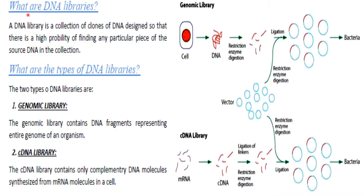Now what is a DNA library? A DNA library is a collection of clones of DNA designed so that there is a high probability of finding any particular piece of source DNA in the collection. There are two types of DNA libraries: one is genomic library and another one is cDNA library.